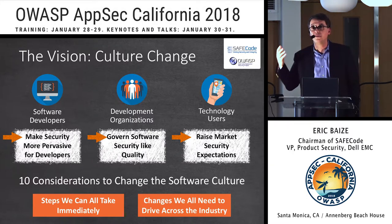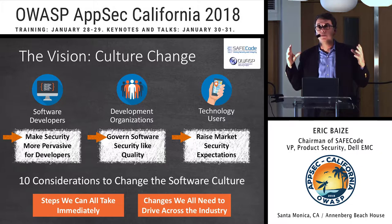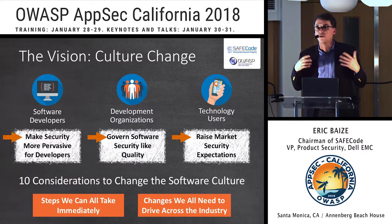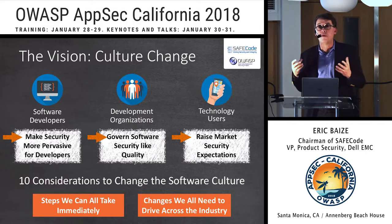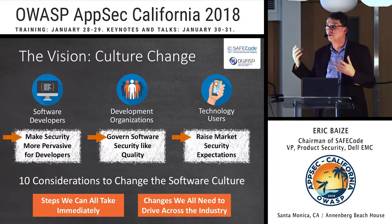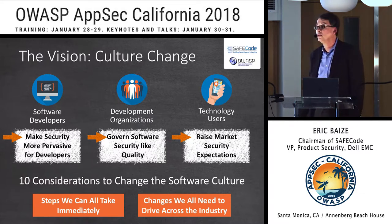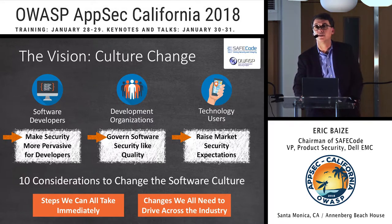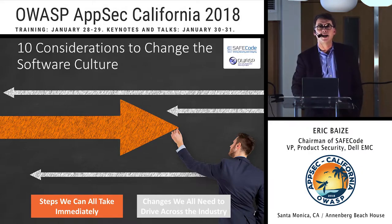In preparation for this keynote, back in November I reached out to the SafeCode community and asked them: what are the culture change agents you have used within your own organization, or that we should use as an industry, to change the culture of software and put security at the center? I got some very interesting feedback and packaged it into 10 considerations in two buckets — things we can all do when we go back to work, and things that are more far-reaching requiring industry-wide collaboration.